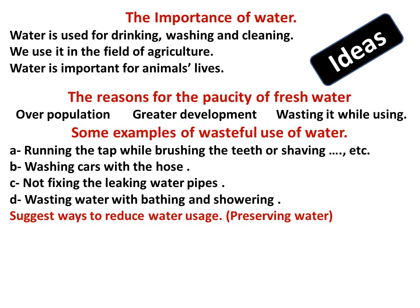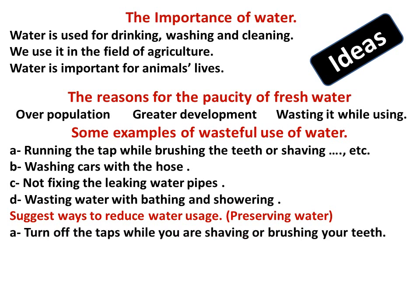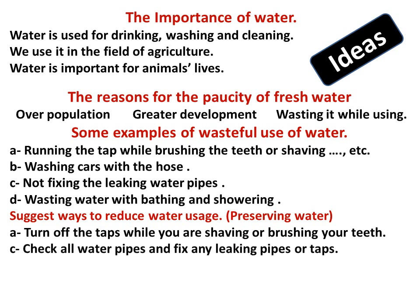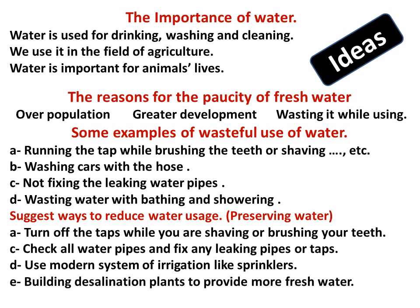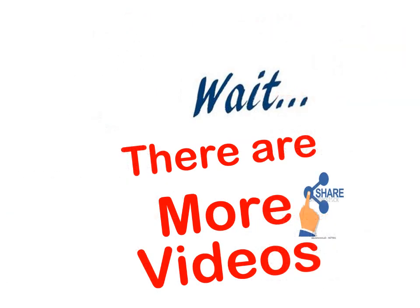Ways to reduce water usage: turn off taps while shaving or brushing teeth, check all water pipes and fix any leaking pipes or taps, use modern systems of irrigation like sprinklers, and build desalination plants to provide more fresh water.